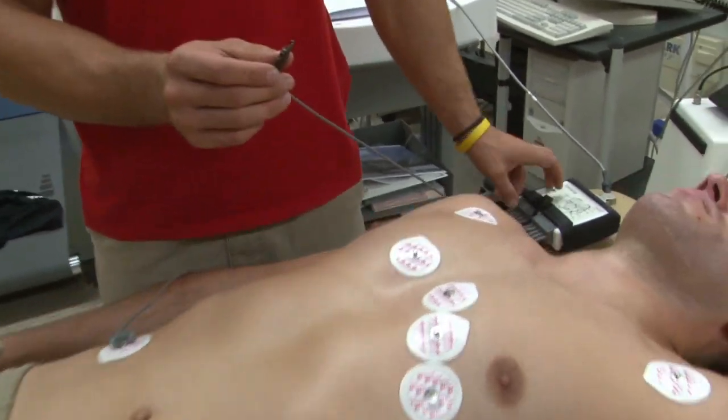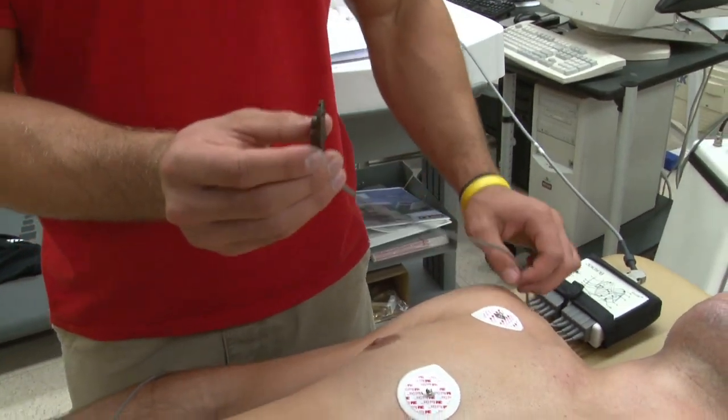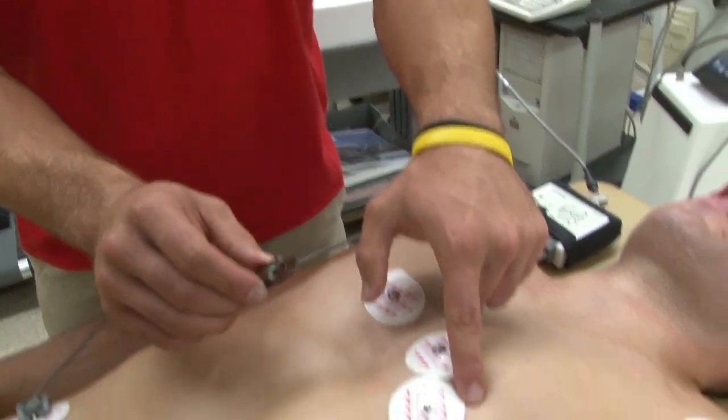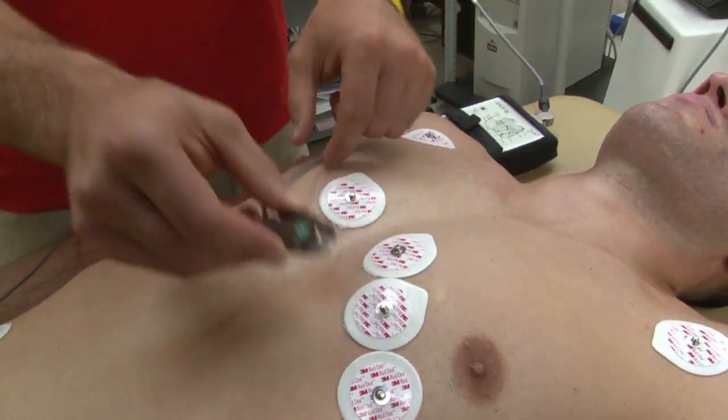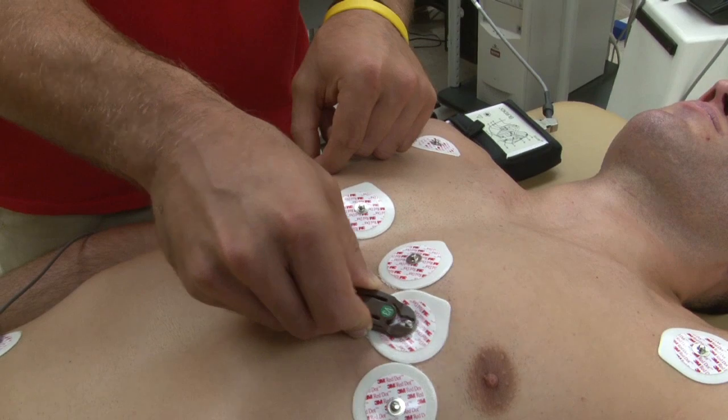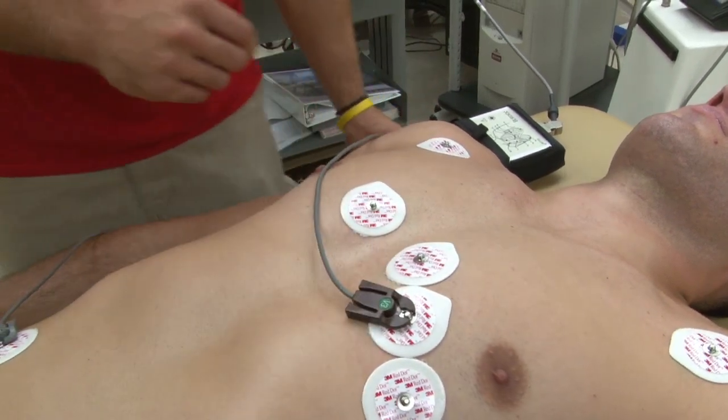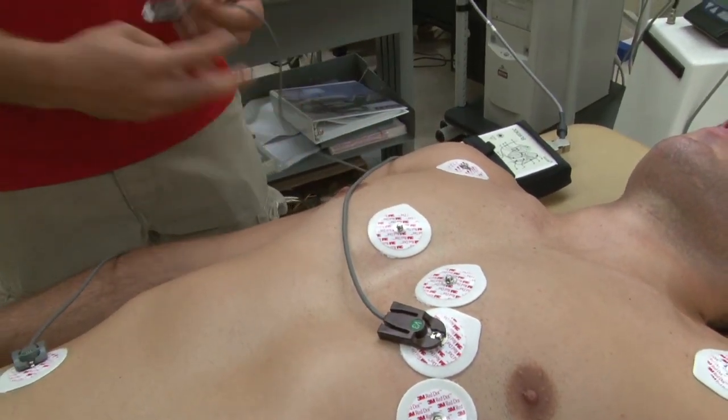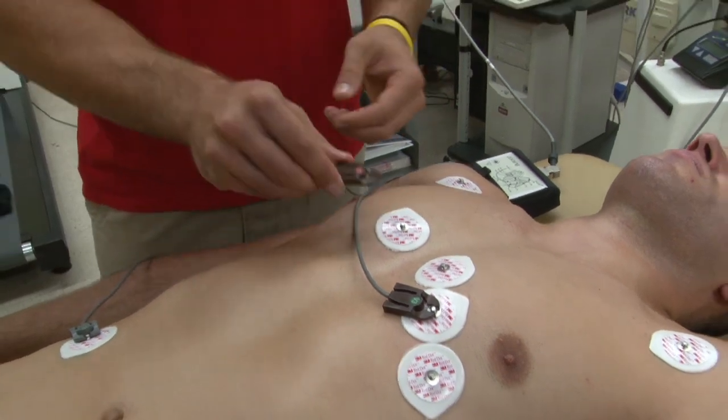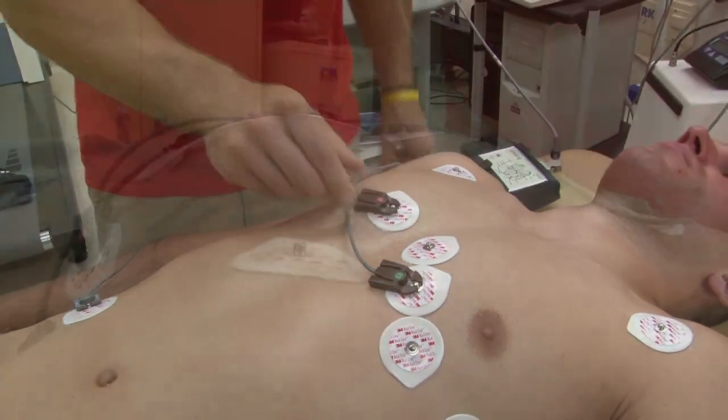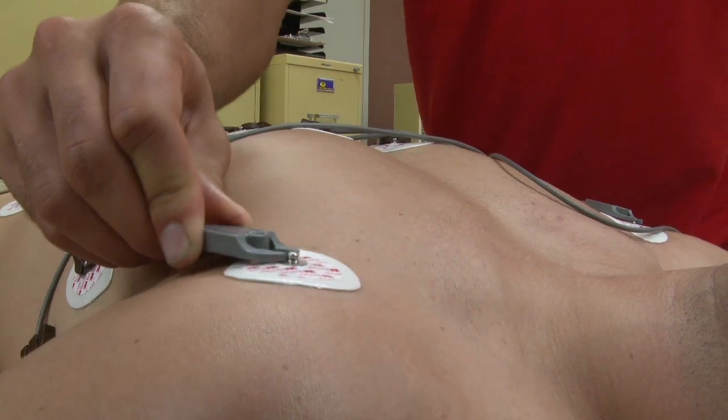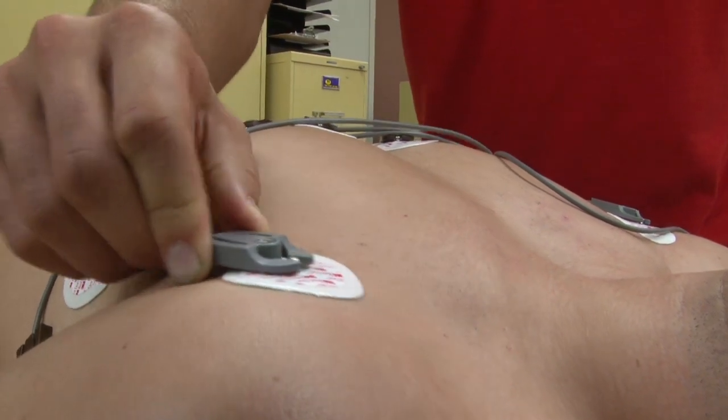And this wire says V3, so as you remember V3 is in between V2 and V4. This is V1. And that is how you apply 12 lead ECG.